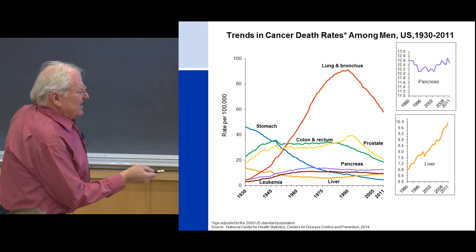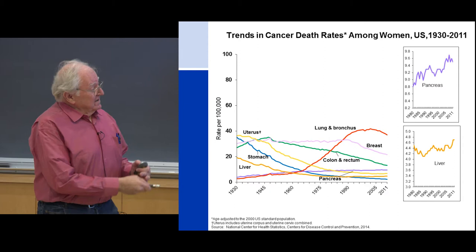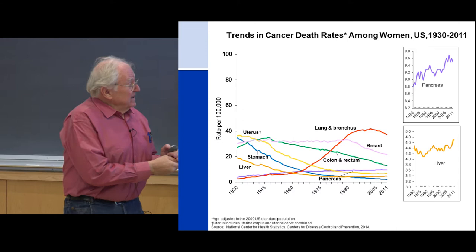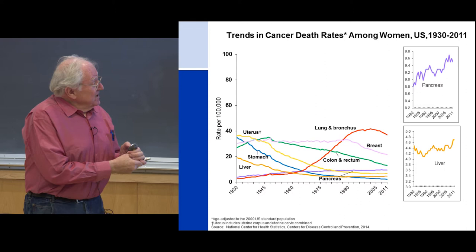In females, a lot of women started smoking well after men, but now they're realizing it's not so good. Lung cancer is declining. Breast cancer is on the decline — mammograms in particular. Colon cancer for the same reason as with men. Stomach cancer also. Uterine cancer — the pap test is very important for women, and you can see the decline in death rates.